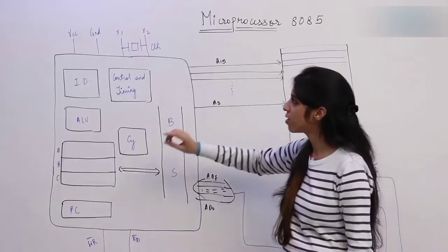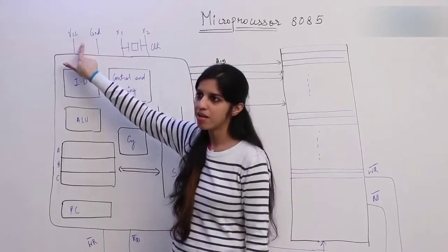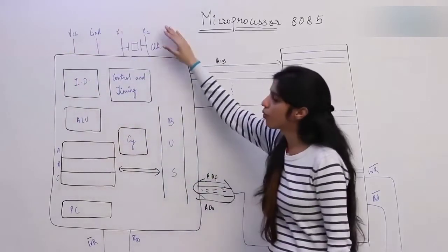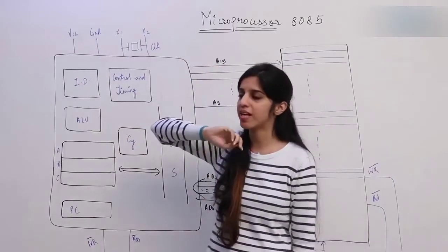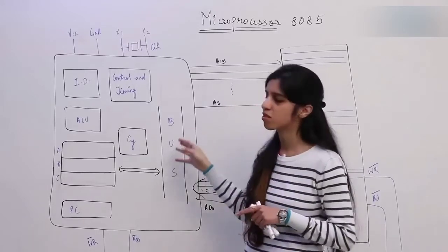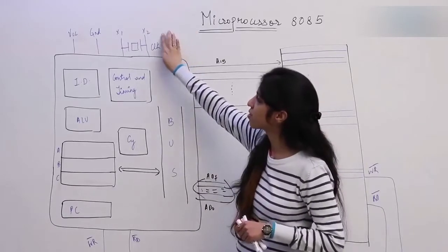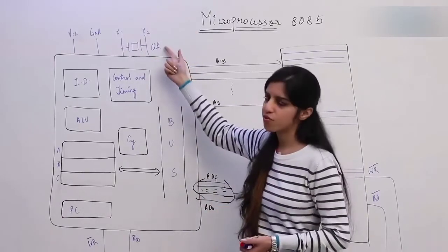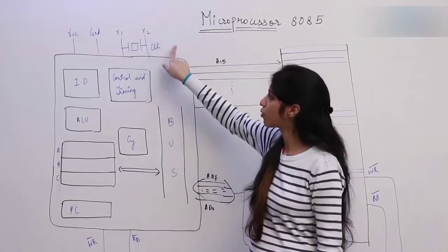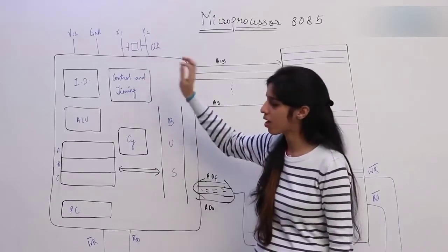Now let's see what all we are going to put in the microprocessor. VCC and ground are obviously given for the power supply. Then we have put a clock — in every sequential circuit, in any circuit where synchronization is required, where you have to interface memory and input/output devices with this circuit, a clock is necessary. We are putting a 3 MHz clock. Actually this is a counter used to provide the clock, but for now you can understand that we are giving the clock to this IC.